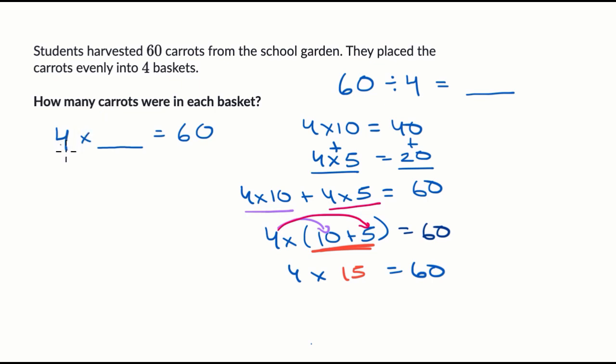So if there's four baskets, and then each of those baskets have 15 carrots, let me do that same orange color. Each of them have 15 carrots, then I'm going to get to 60.